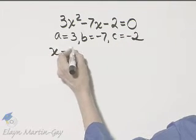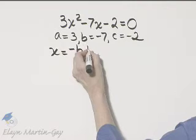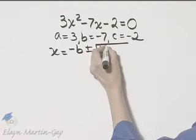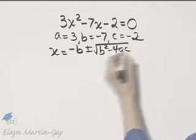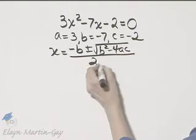We're solving for X, so X is negative B plus or minus the square root of B squared minus 4AC all over 2A.